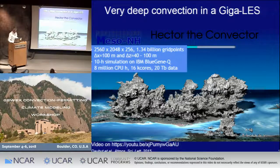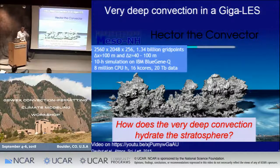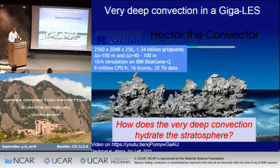We would like to know how very deep convection reaches the lower stratosphere in the tropics, which is of interest for the composition of the stratosphere in terms of water vapor — because it's a greenhouse gas also in the stratosphere, and through its interaction it can cause destruction of ozone.